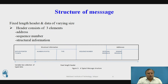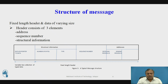The structure of messages: in the message passing approach, a fixed format is used, with a fixed-length header and data of varying size. The header consists of three elements: address, sequence number, and structural information. In the typical message structure, the first part is data or a pointer to data, followed by structural information including number of bytes and type. Then a sequence number — the message ID — and an address containing the receiver ID and sender ID. The variable-size data forms one part, and the fixed-length header forms the other.